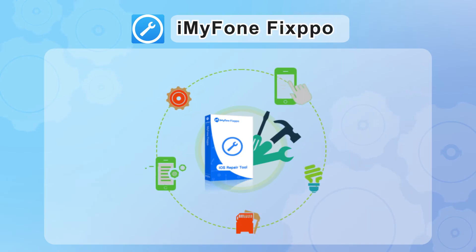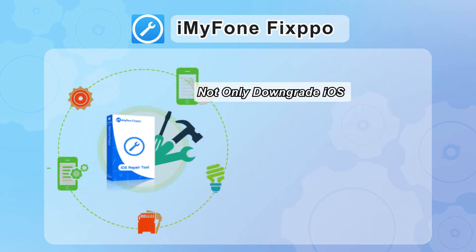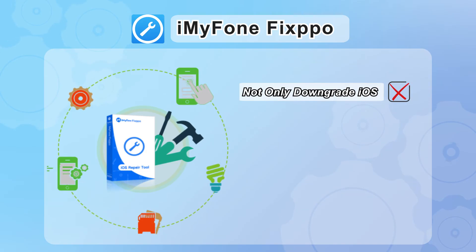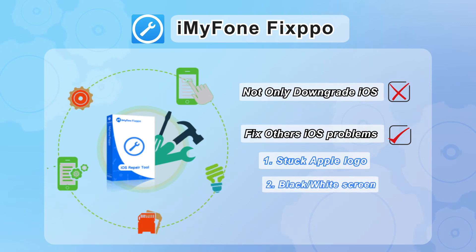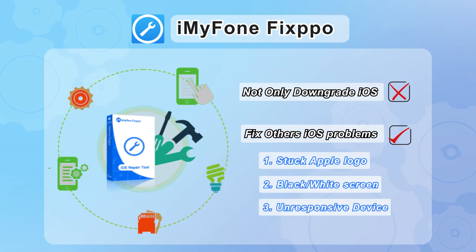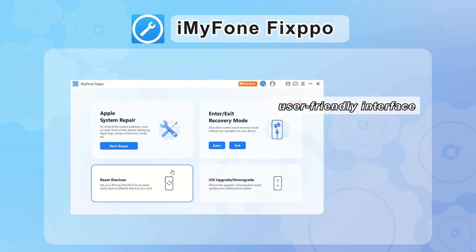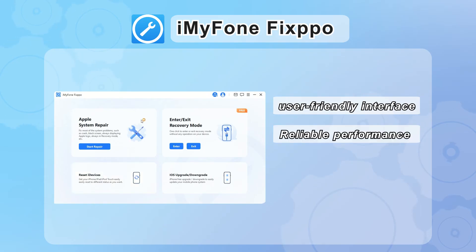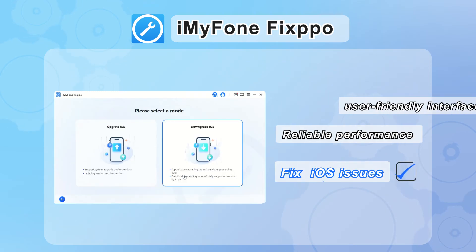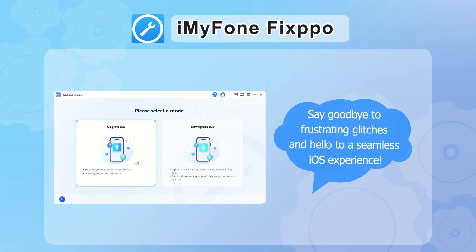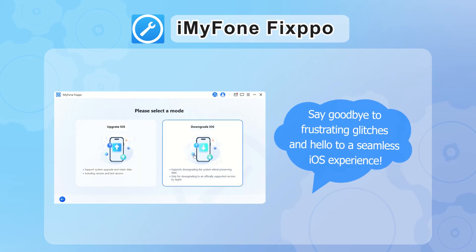It is worth mentioning that iMyPhone Fixbow, as a powerful iOS repair tool, is not only useful for downgrading iOS versions but is also designed to solve various iOS problems. Whether you encounter a stuck Apple logo, black or white screen, unresponsive device, or other problems, iMyPhone Fixbow can provide support. With its user-friendly interface and reliable performance, you can easily fix iOS issues — say goodbye to frustrating glitches and hello to a seamless iOS experience.